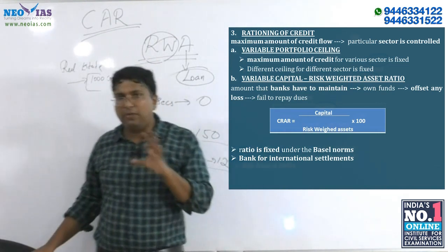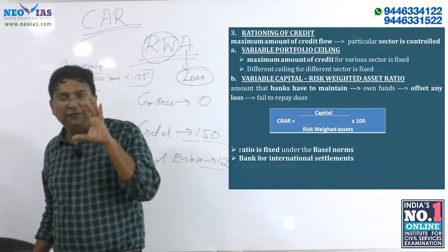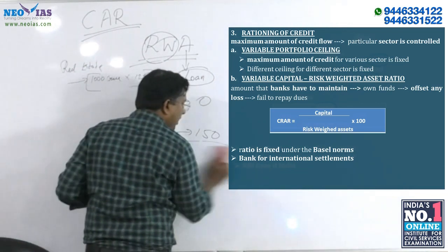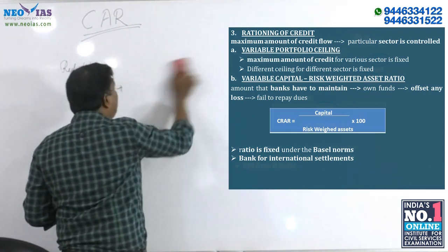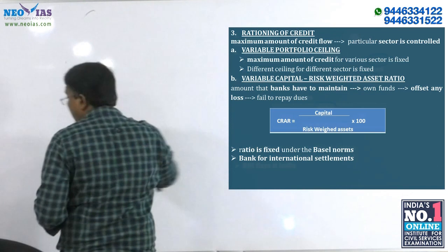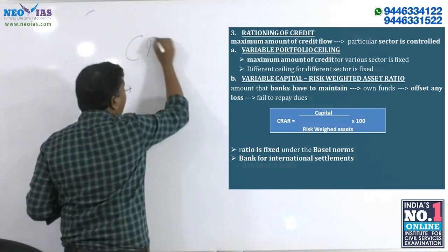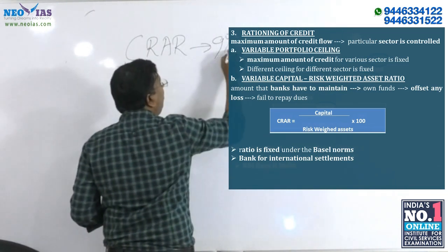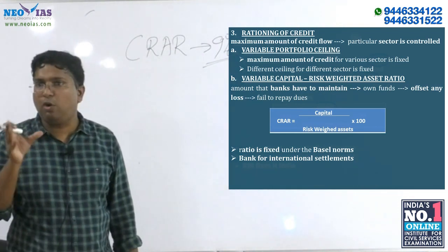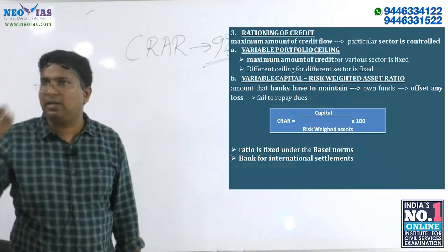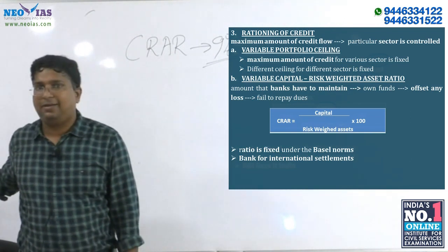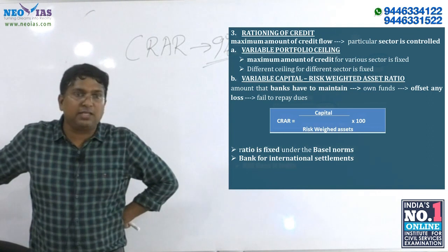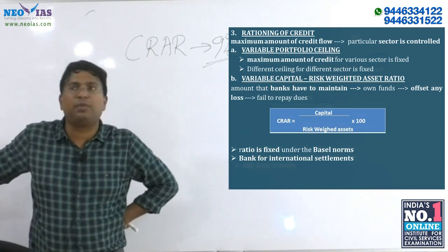RBI will fix the Capital to Risk-Weighted Asset Ratio for every bank. RBI says that all Indian commercial banks should have a CRAR of at least 9%. If you go below this, you will be put under certain lists like the Prompt Corrective Action (PCA) list, which creates a bad impression about the bank.